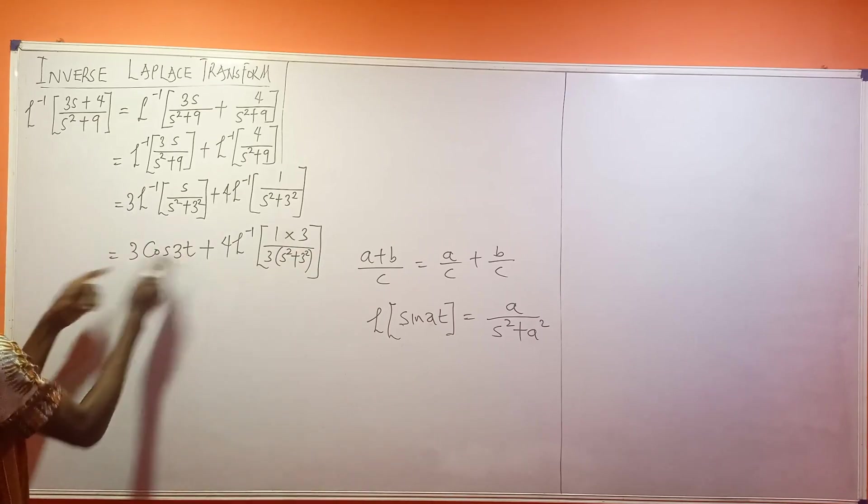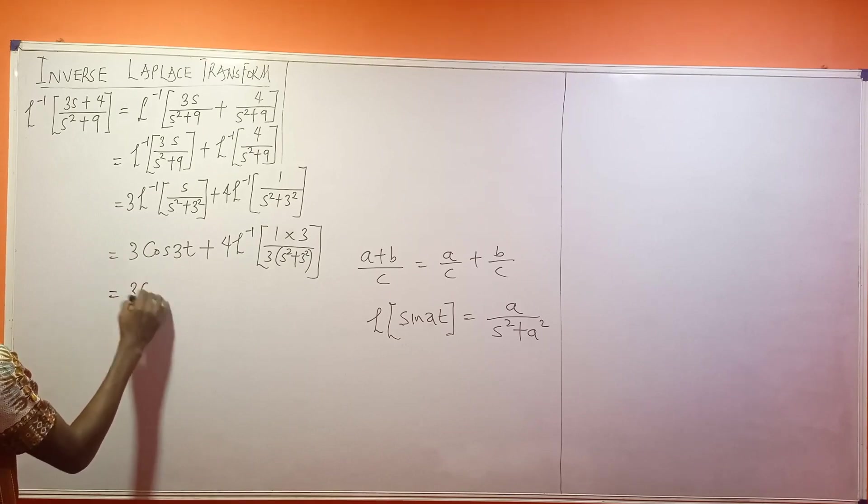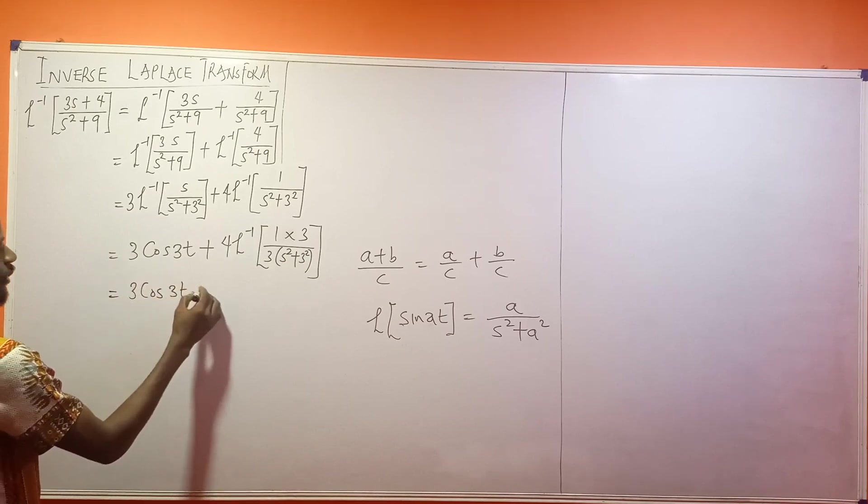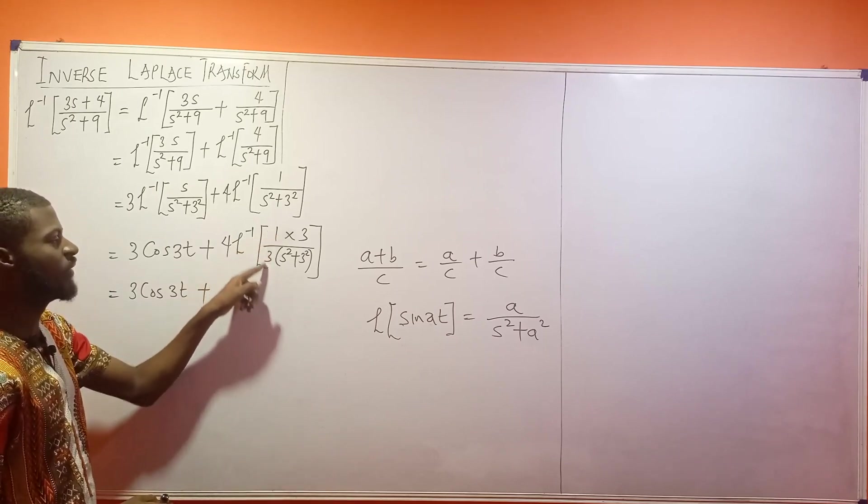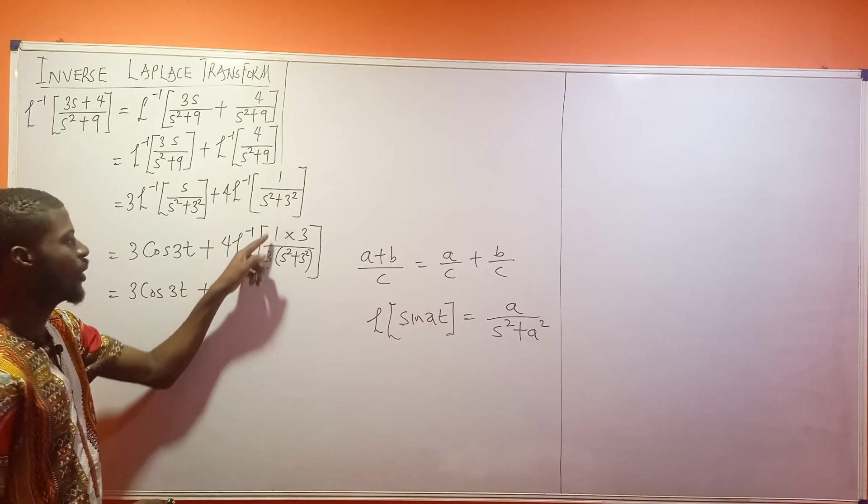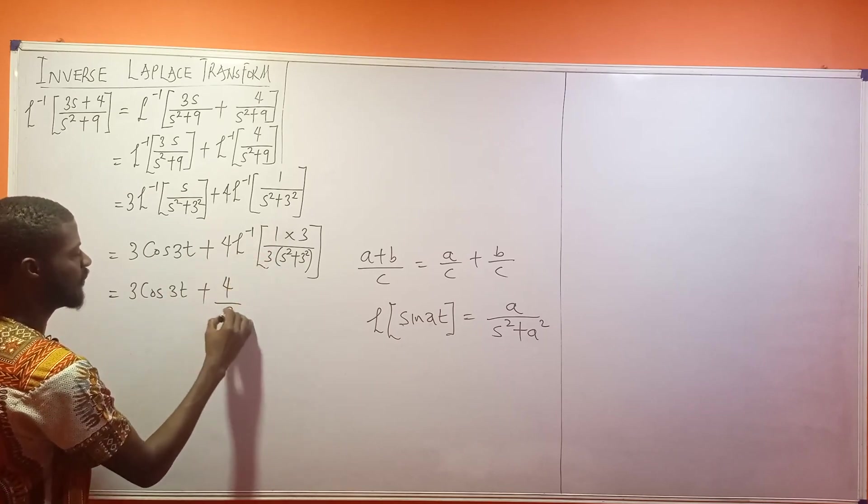I'm looking at this. We've gotten this part already. So this is 3 cos 3t plus. Now look at this, this is 1 over 3. This 1 over 3 is a constant. Do you agree? When it comes aside, what will it become? So this is now 4 over 3.